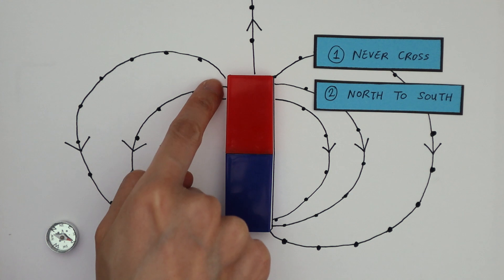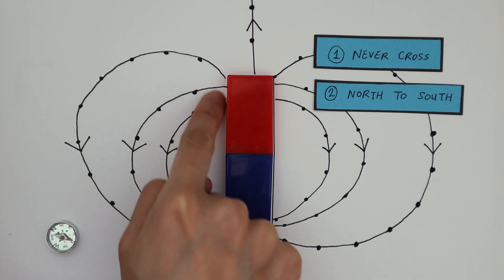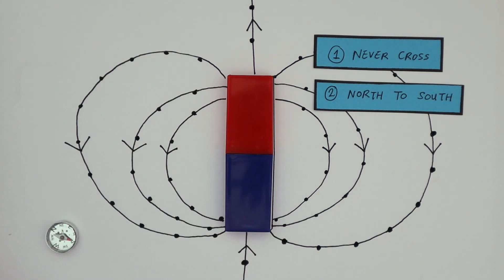Number two, they always point from the north pole of magnets to its south pole. North into south. So that must mean that this is north and this is south.